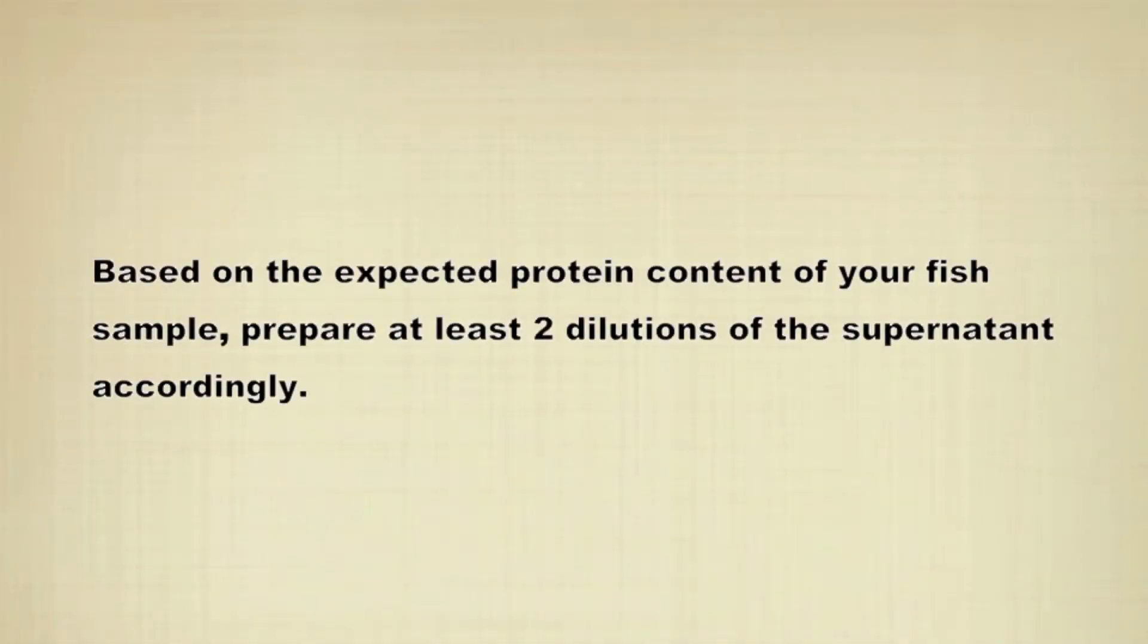Based on the expected protein content of your fish sample, prepare at least two dilutions of the supernatant such that they fall within the concentration range of your linear BSA standard curve.